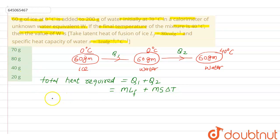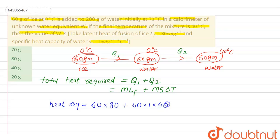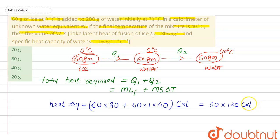The total heat required is: Q1 = 60 × 80, and Q2 = 60 × 1 × 40 (temperature change from 0 to 40 degree Celsius). Taking 60 common: total heat = 60 × (80 + 40) = 60 × 120 calories. This is the heat needed for converting ice into water and then heating the water up to 40 degree Celsius.